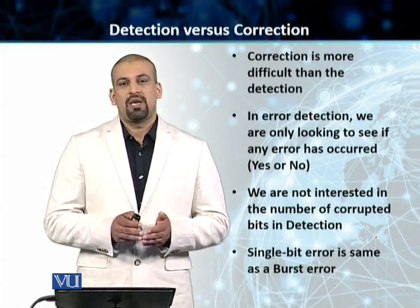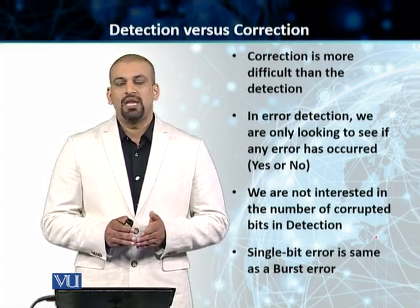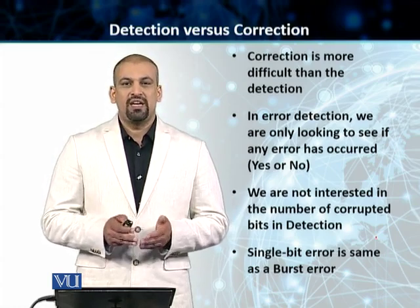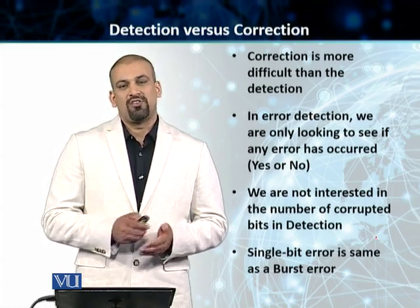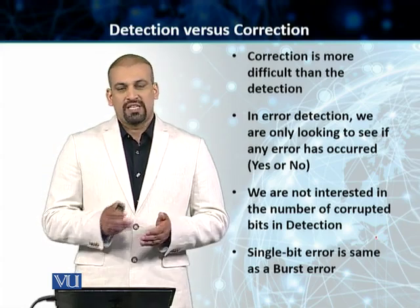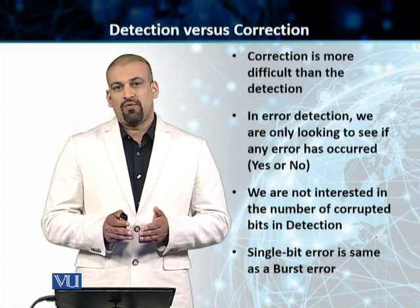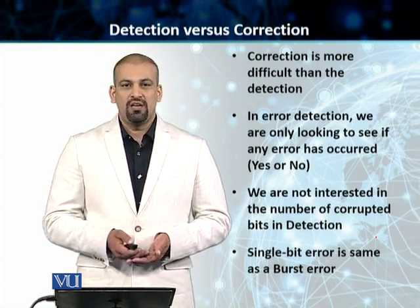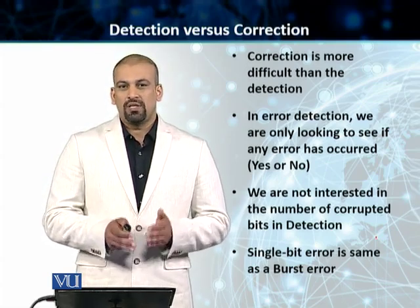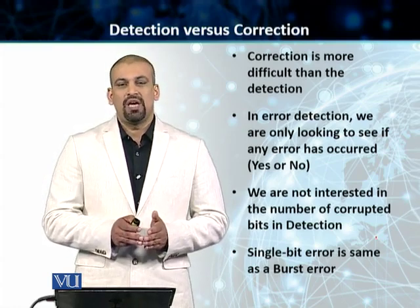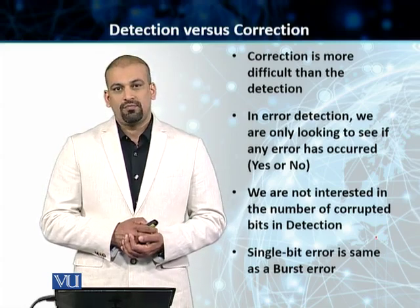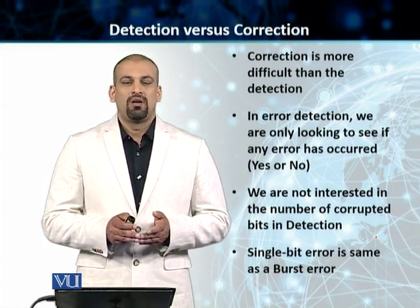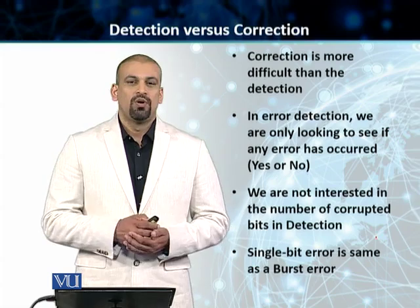This type of error detection, without any mechanism for error correction, is normally employed in cases where the only way to fix an error is to use retransmission — to ask the sender to send the message again. In this case, we deploy just enough mechanism to allow error detection; correction is normally not done. So we have a simpler task at hand compared to error correction.